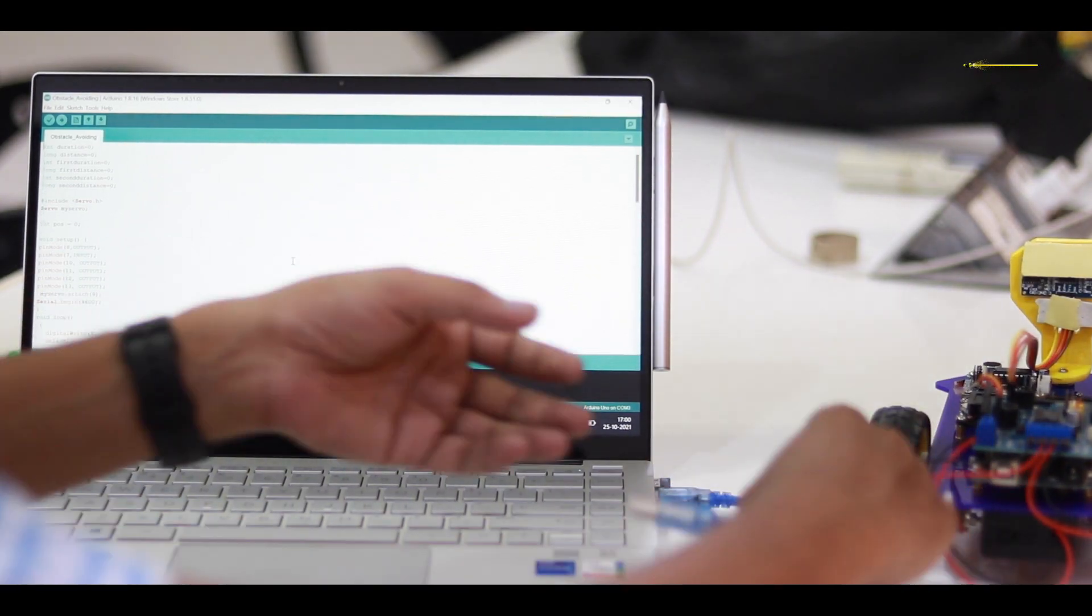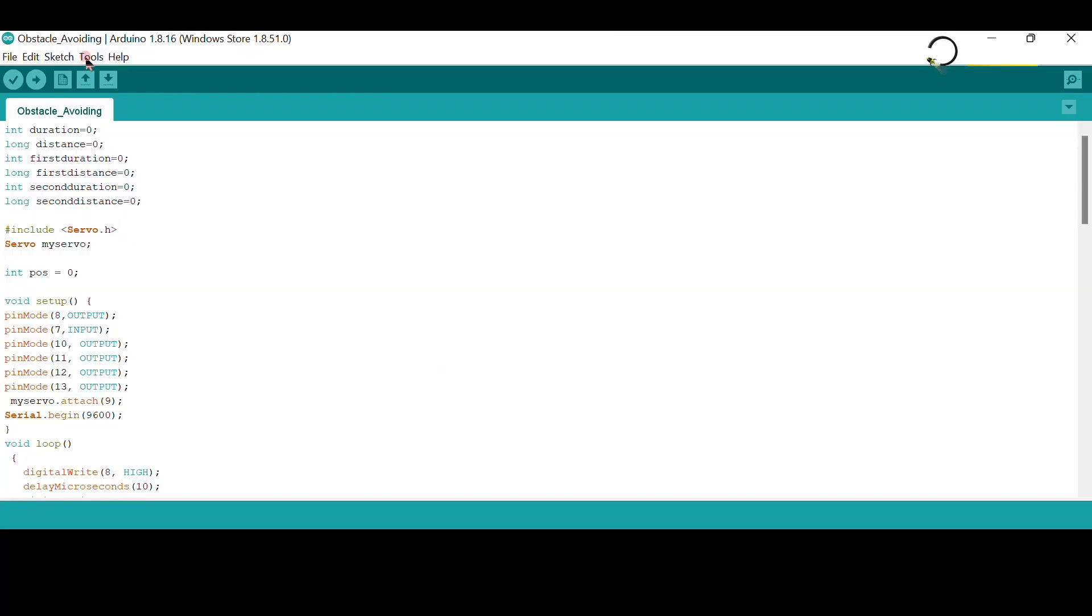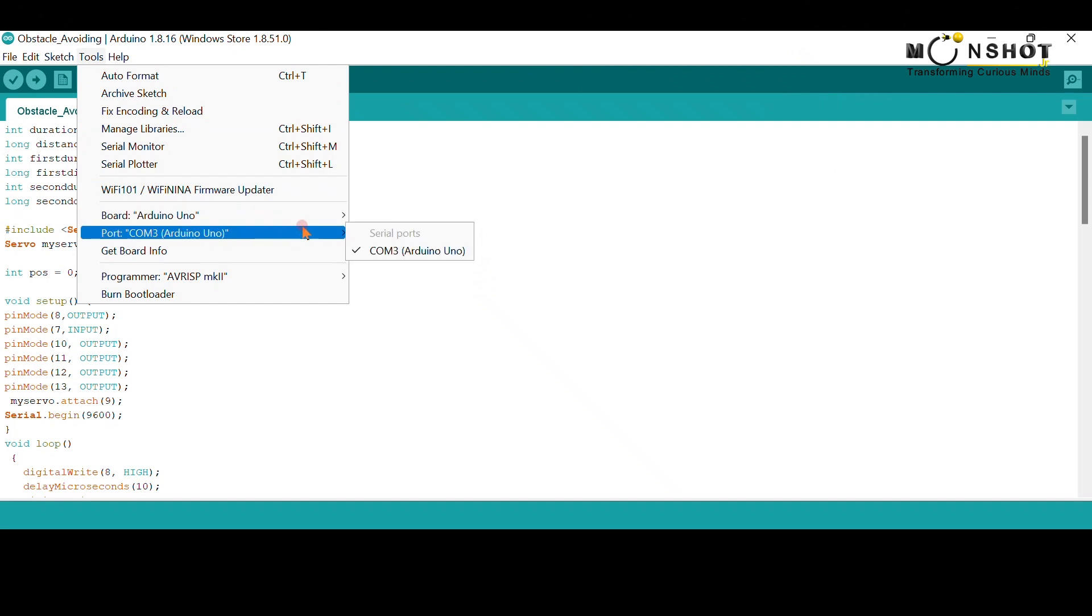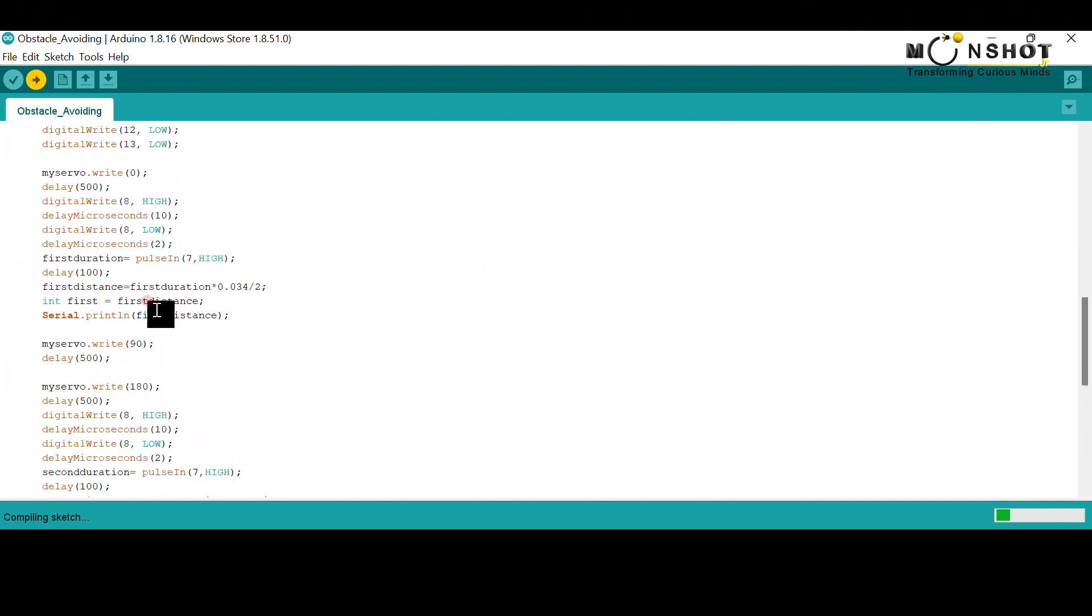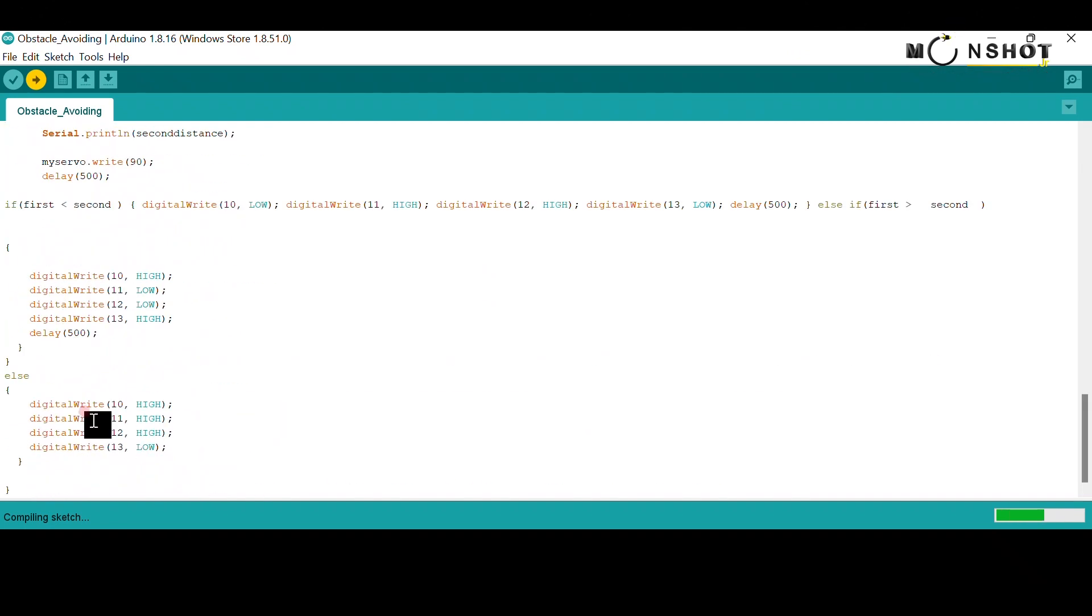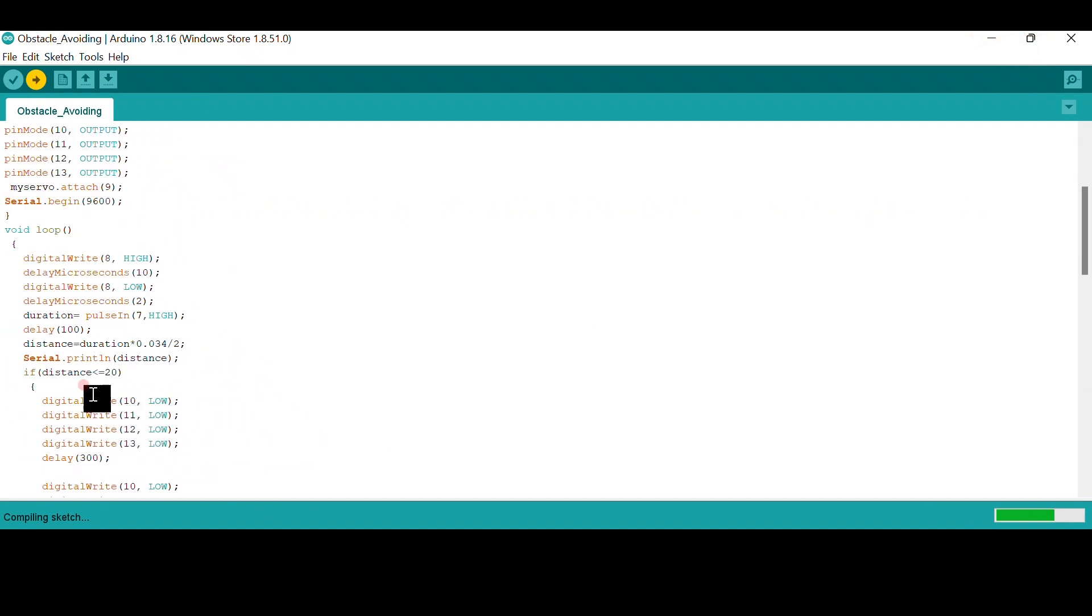Connect your Arduino via the cable and then go to tools. Click ports and we are going to select this port. Then, copy this code from the doc file given below in the description. Paste it here and then click upload. And voila! Your code is uploaded on the robot car.